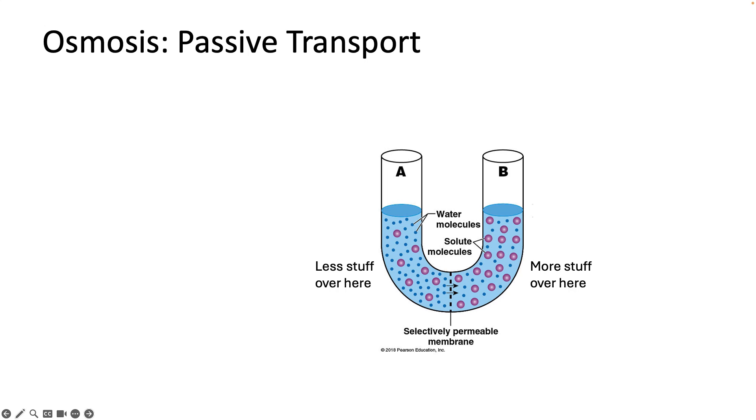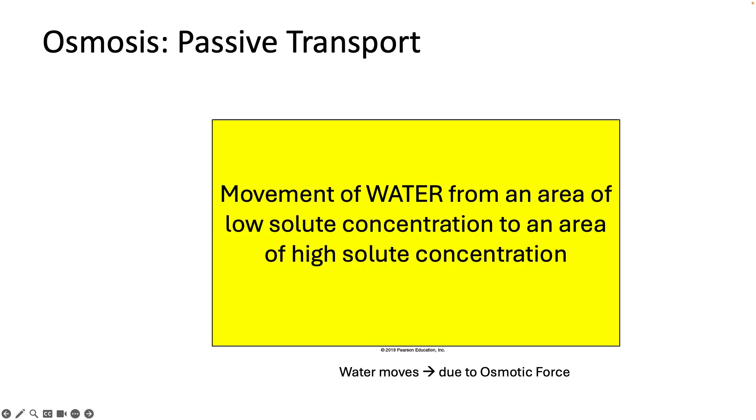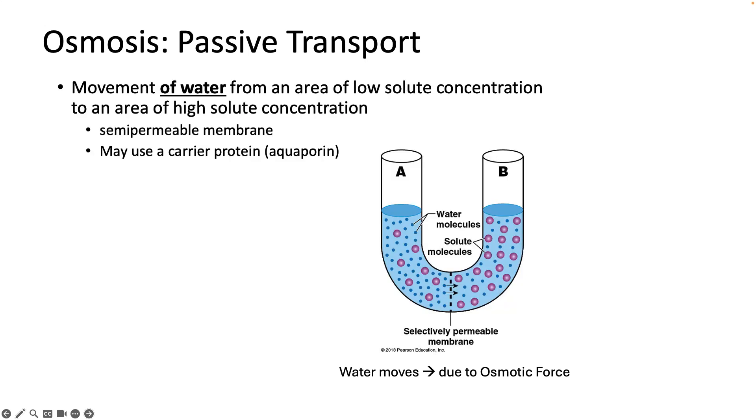But what if they can't move because the membrane is not permeable to them? If the stuff can't move, it creates an osmotic force that will result in water moving towards the right, towards the area of greater solute concentration. This is what osmosis is. We're moving water from an area of low solute concentration, low stuff, to an area of high solute concentration, high stuff. Put more simply, if the stuff can't move, water follows the stuff.